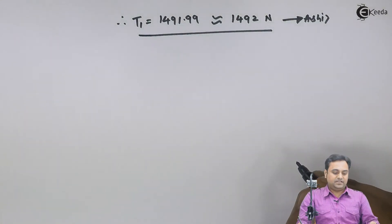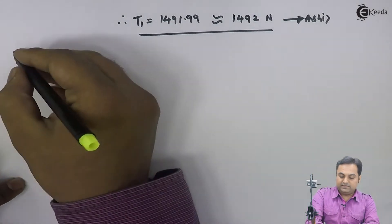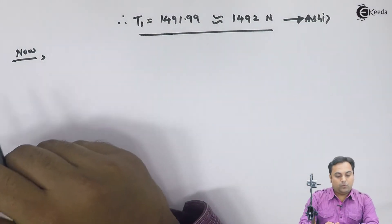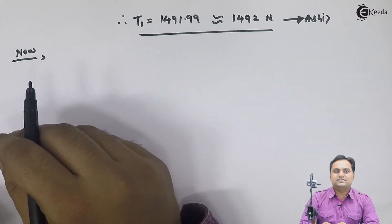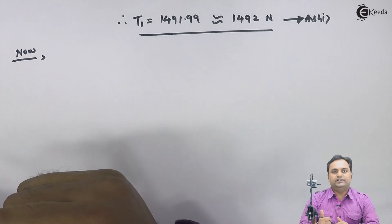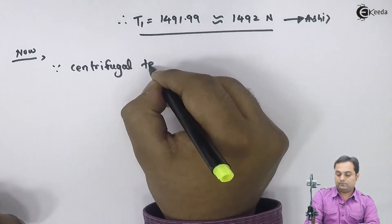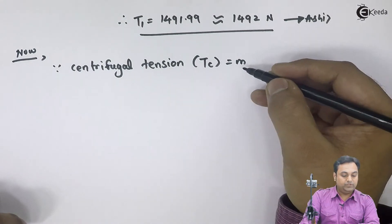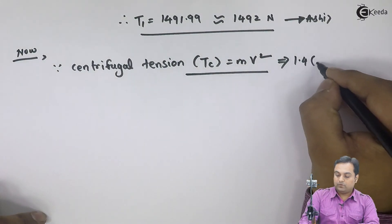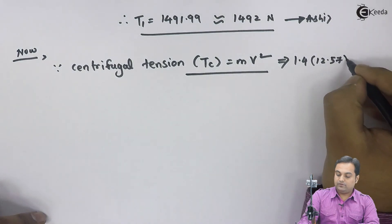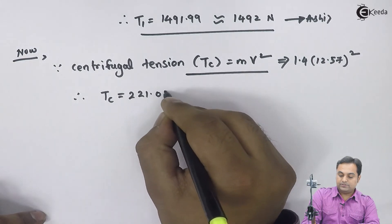We have calculated t1 and t2 — tension in tight side and slack side. Now we need to calculate maximum tension and initial tension. Since mass is given, we use the concept of mass and velocity to calculate centrifugal tension. Centrifugal tension tc = m × v² = 1.4 × (12.57)², giving tc = 221.07 newton.